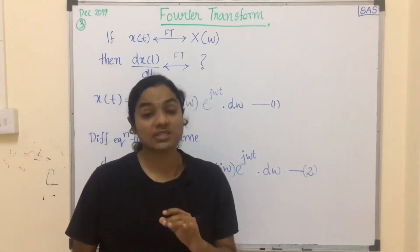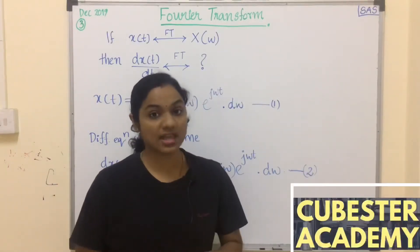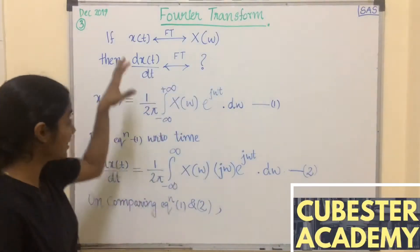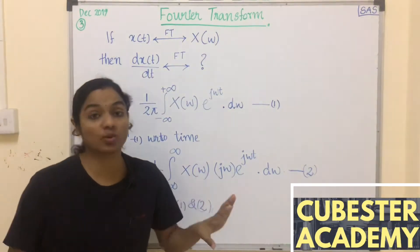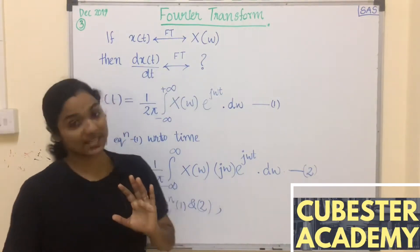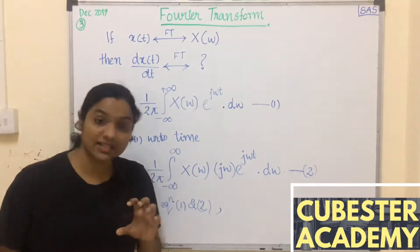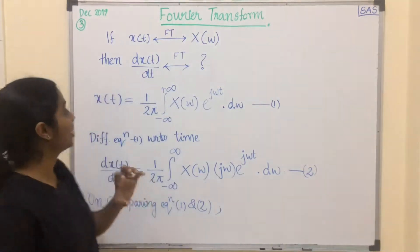The Fourier transform of x(t) is X(ω). Derive the Fourier transform of dx(t)/dt. This question is asked for 5 marks, and within these simple steps we can score the 5 marks easily. Let us see the solution now.